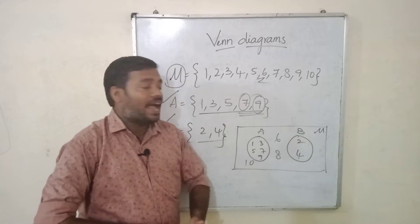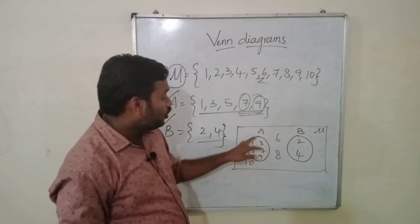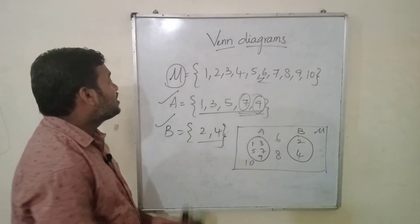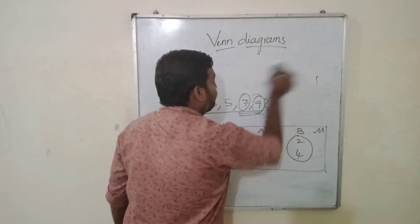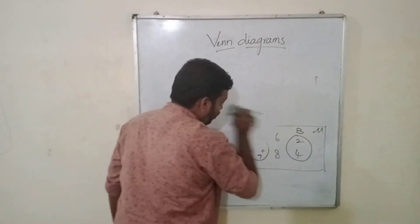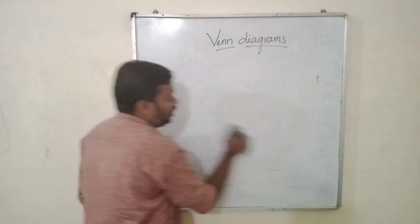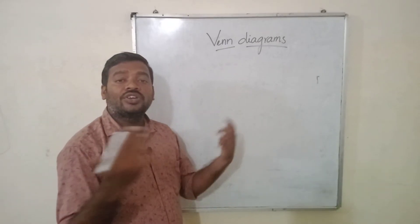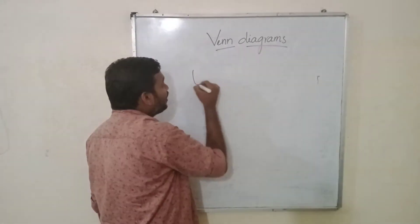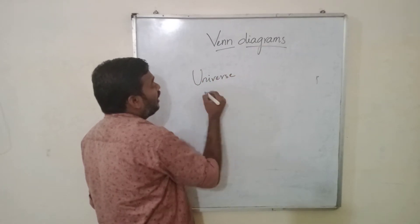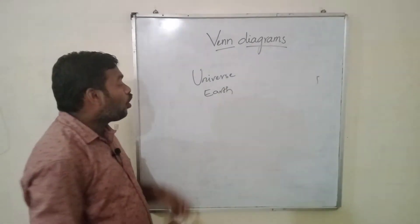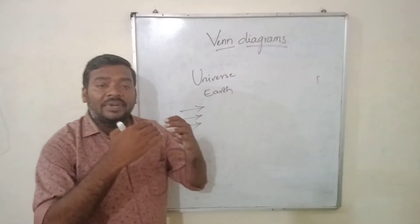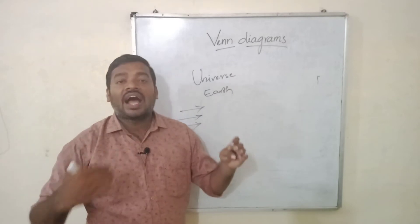You need to think of it as taking a universal set and mentioning groups within it. In general, if you are taking a state — that is a part of a country — state is a part of a country. Suppose you consider the universe: in the universe we have Earth, in Earth we have continents. We are subdividing groups from the universal set to other sets.